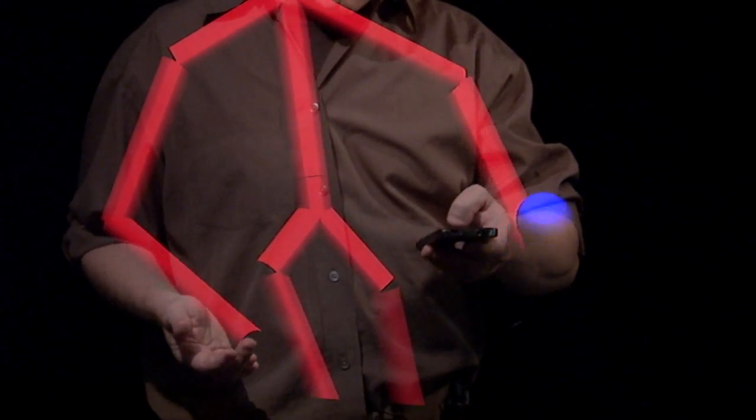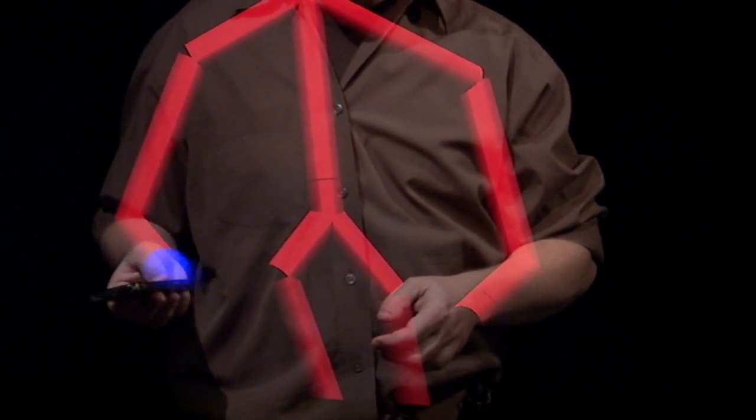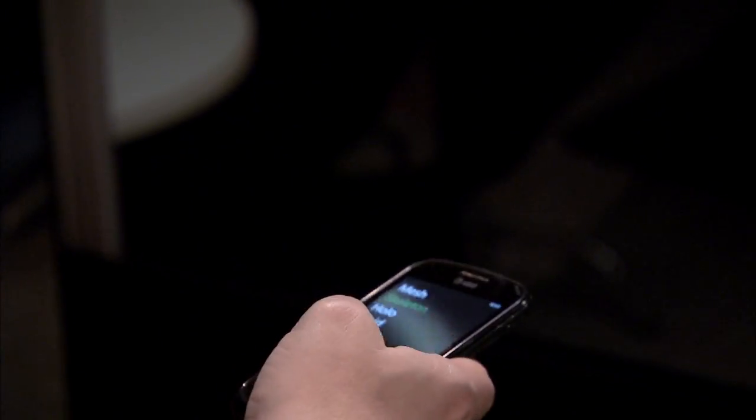That's basically showing me where the system thinks my Windows phone is right now. So that's an idea we call sensor fusion, and it demonstrates the complementary nature of the sensors on the phone and the Kinect sensors.